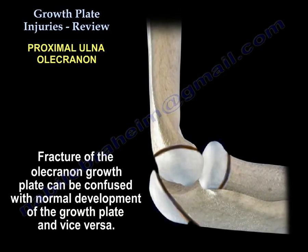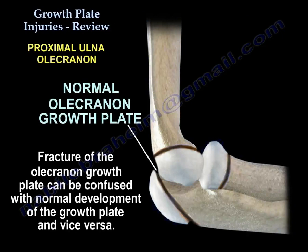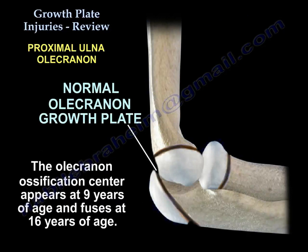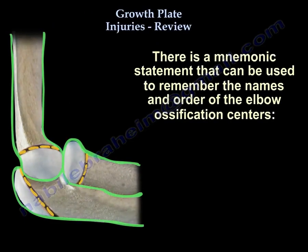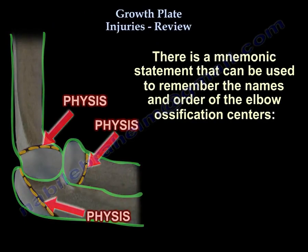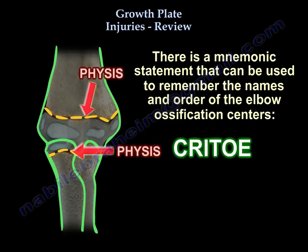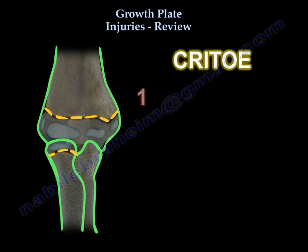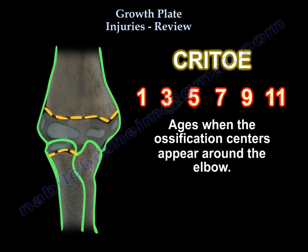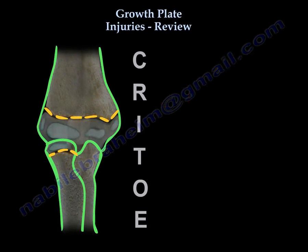At the elbow, olecranon fracture can be confused with a growth plate and vice versa. The olecranon ossification center appears at age 9 and fuses at age 16. The patient may not be able to extend the elbow, and there may be association with osteogenesis imperfecta. You must know when the ossification centers appear around the elbow using the mnemonic CRITOE, appearing at ages 1, 3, 5, 7, 9, and 11, with two years between each.